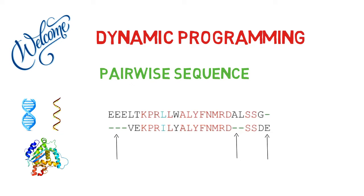There are two different kinds of pairwise sequence alignment. Global alignment is the first, and local alignment is the second.